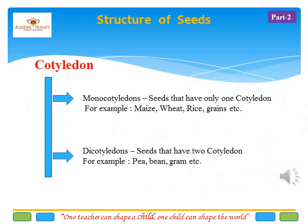Slide 12. In this slide we are going to see the types of cotyledon. Cotyledon is further divided into two parts. The first is monocotyledon — mono means single. Seeds that have a single cotyledon are called monocotyledon, for example maize, rice, and wheat grain. The second is dicotyledon — di means two. Seeds that have two cotyledons are called dicotyledon, for example pea, bean, and gram.